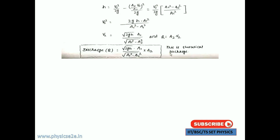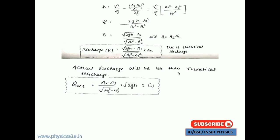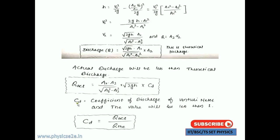The theoretical discharge is q = a1·a2 divided by the square root of (a1² minus a2²), multiplied by the square root of 2gh. The actual discharge will be less than the theoretical discharge. Therefore, actual discharge equals Cd times a1·a2 divided by the square root of (a1² minus a2²) times the square root of 2gh. Here Cd is the coefficient of discharge of the Venturi meter, with a value less than 1. Cd equals q_actual divided by q_theoretical.